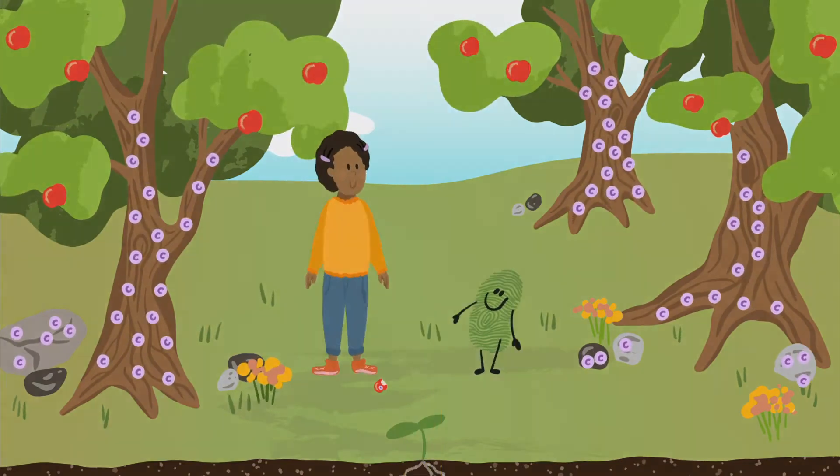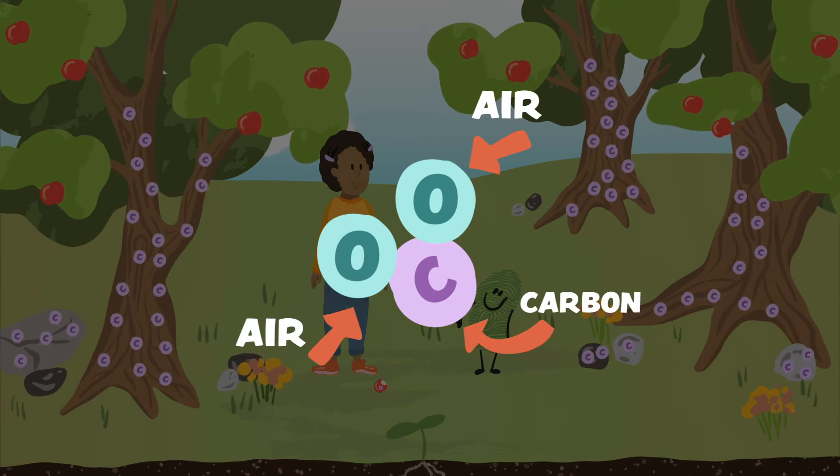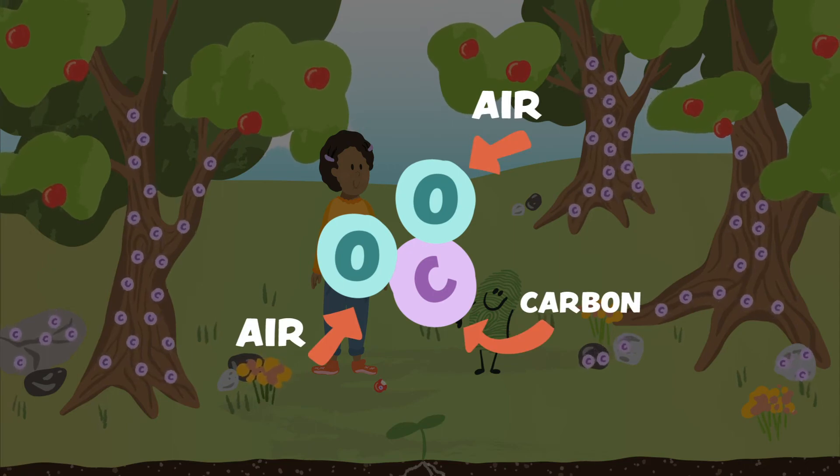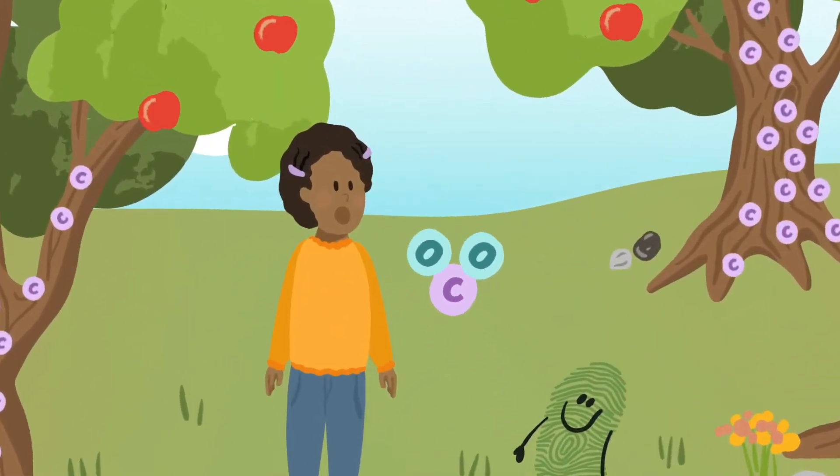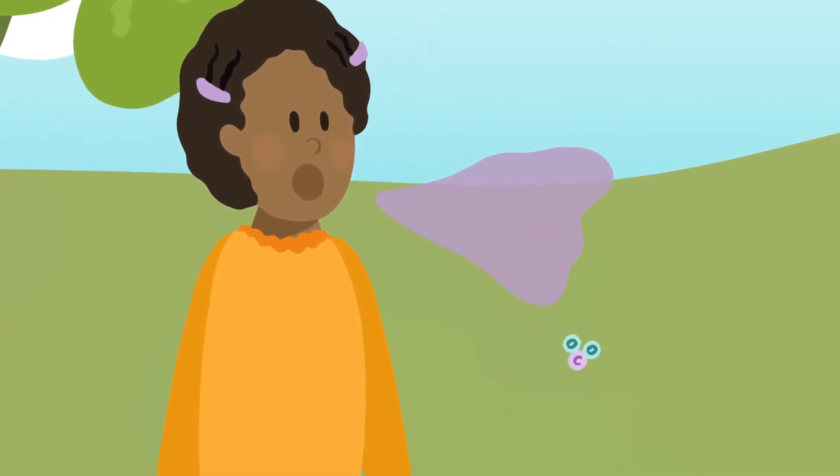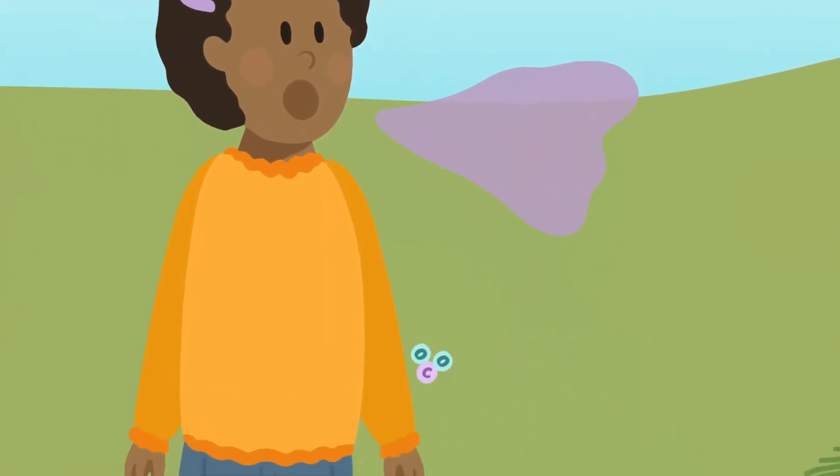Carbon can come in different forms in the soil or bond with oxygen in the air as carbon dioxide. Animals, like you and me, breathe out carbon dioxide, and plants breathe it in.